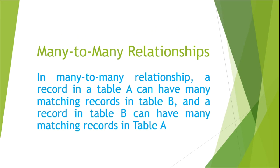Now moving to the many to many relationship. In a many to many relationship, a record in table A can have many matching records in table B, and a record in table B can have many matching records in table A. For example, a teacher teaches multiple subjects and multiple subjects are taught by multiple teachers. So we can say the teacher table and the subject table are in a many to many relationship.